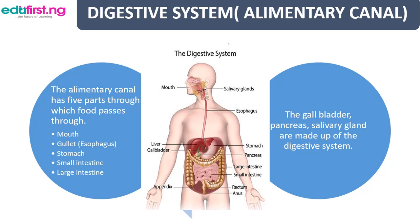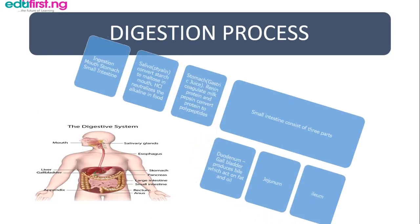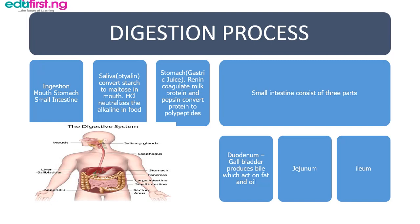The digestion process starts with ingestion, where you take in the food through the mouth, down to the esophagus, down to the stomach, to the small intestine, to the large intestine. Now in the mouth, we have an enzyme which converts starch to maltose — it's called tylin. And in the same mouth we also have hydrochloric acid, HCl, which neutralizes the alkaline in food.